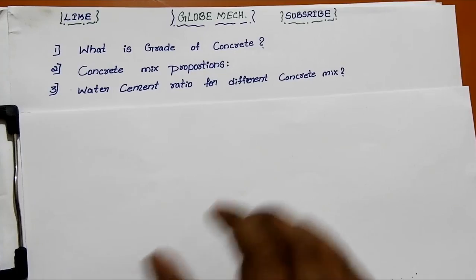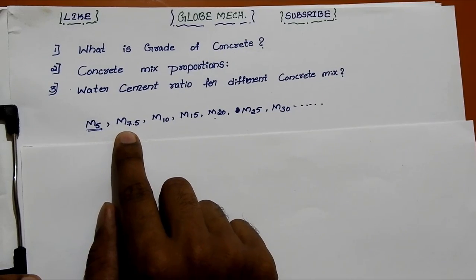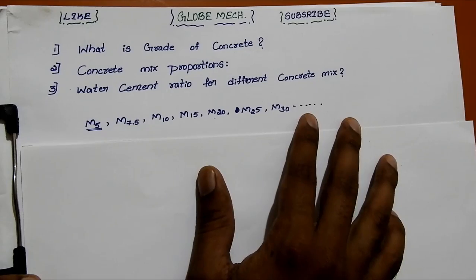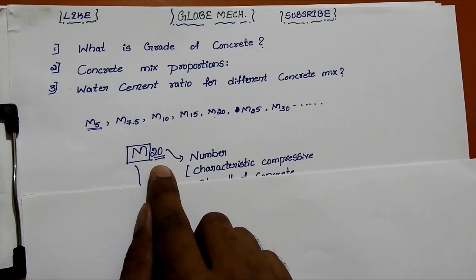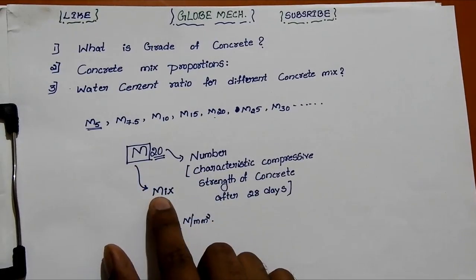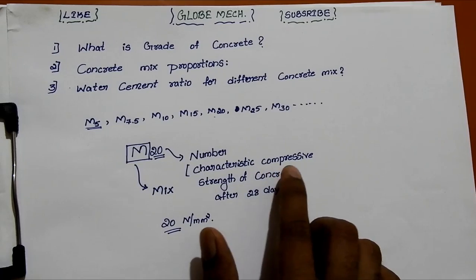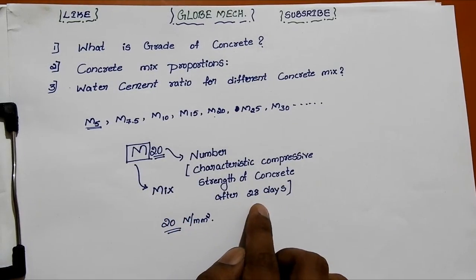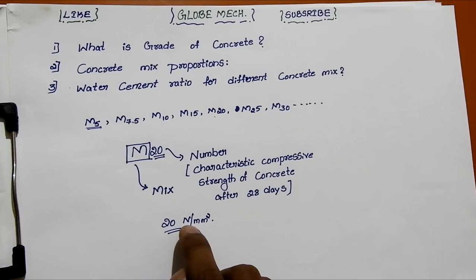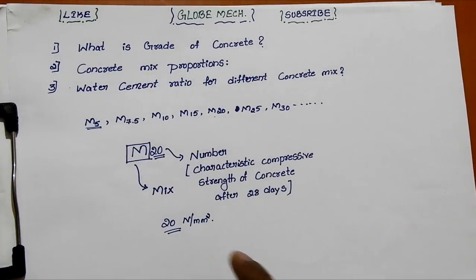First we will see what is grade of concrete. Grade of concrete means M5, M7.5, M10, M15, M20, M25, M30, etc. Now in M20, M means mix and 20 represents the characteristic compressive strength of concrete after 28 days. So the total value after 28 days when you test in the concrete laboratory, you will get 20 N per mm square of compressive strength — that is M20.